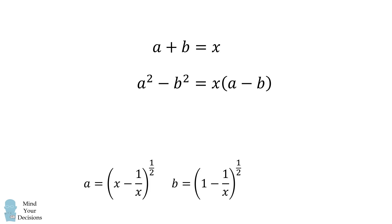We will then simplify the difference of squares. a squared is equal to x minus 1 over x, and b squared is equal to 1 minus 1 over x. Therefore, a squared minus b squared is equal to x minus 1.